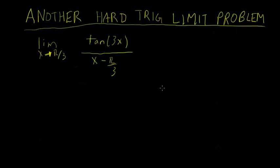In this video, we're going to be looking at another difficult trig limit problem. It's the limit as x approaches pi over 3 of tan(3x) over (x minus pi over 3).